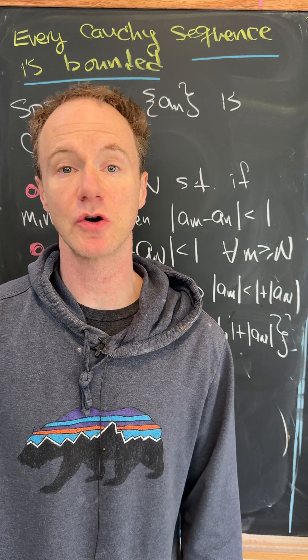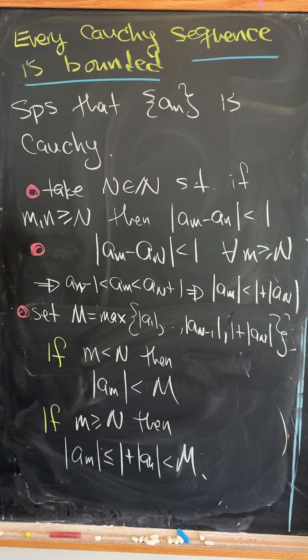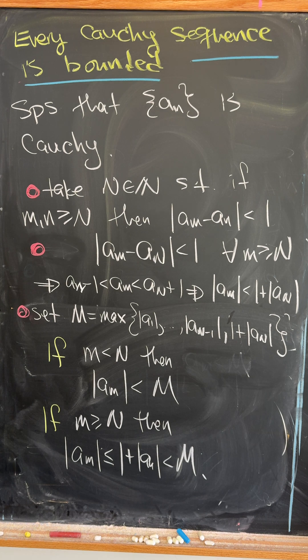Let's show that in the real numbers every Cauchy sequence is bounded. So let's suppose that we have a Cauchy sequence and let's take an N so that if m and n are bigger than or equal to that capital N, then the absolute value of a_m minus a_n is less than one.